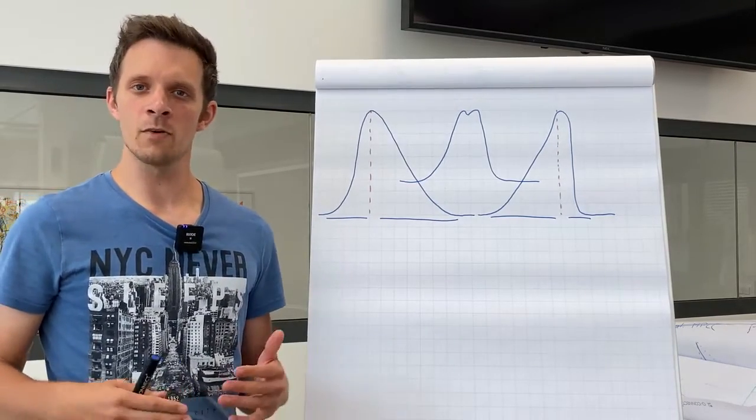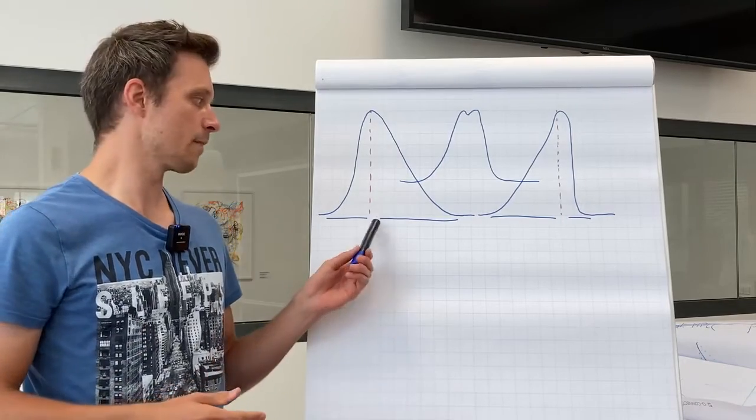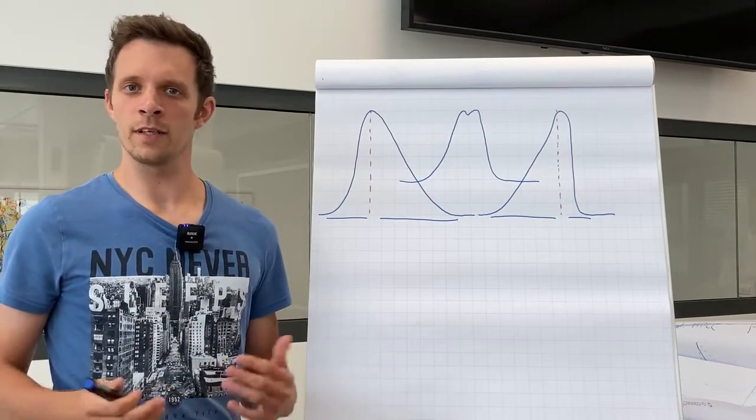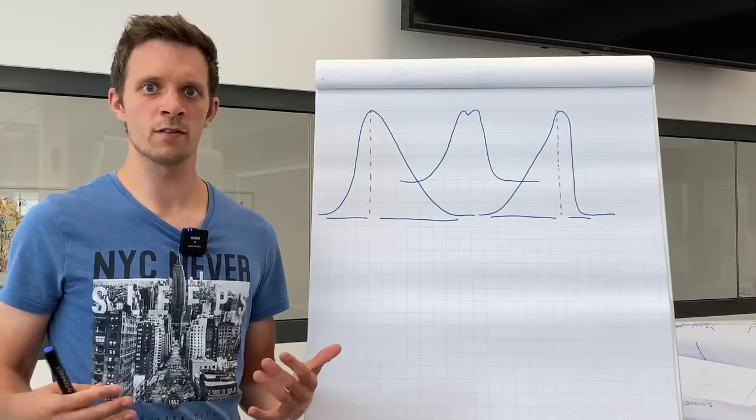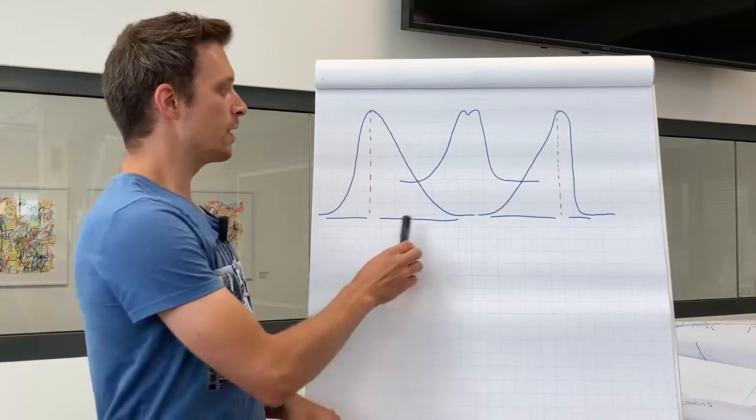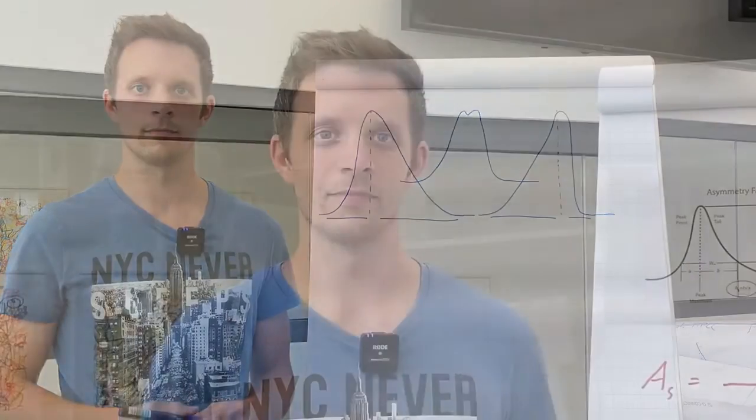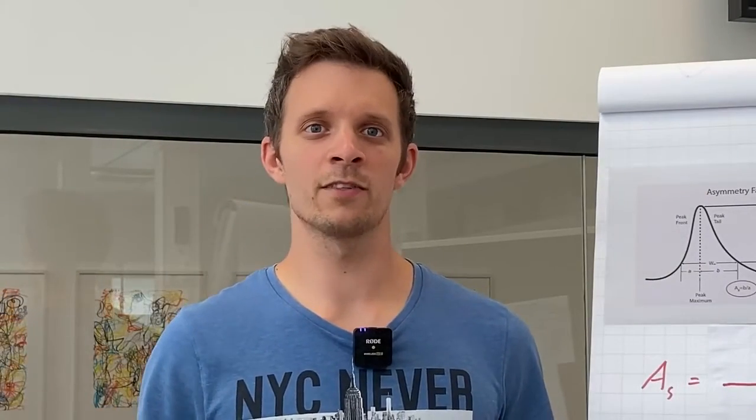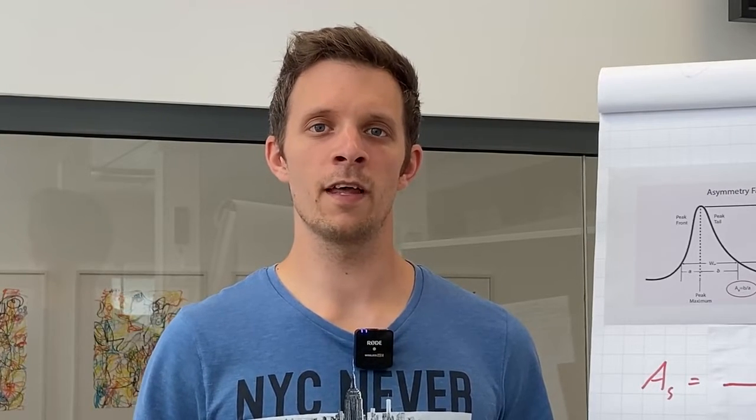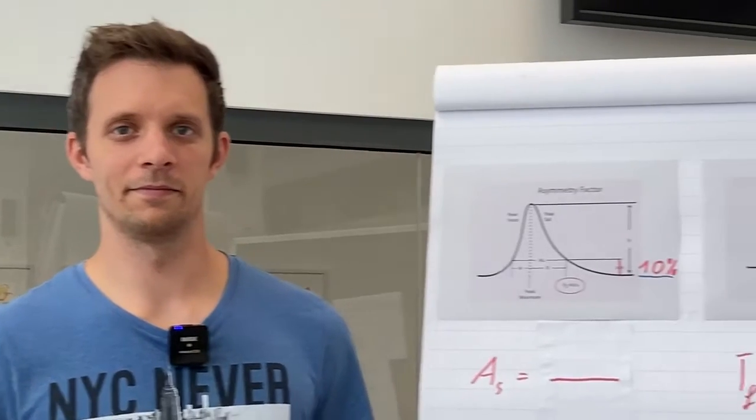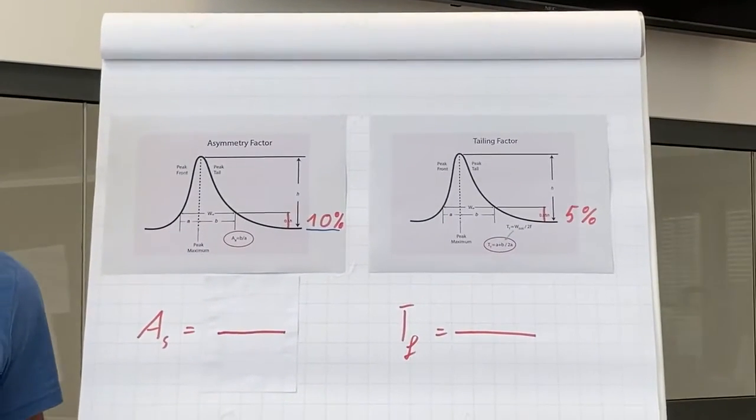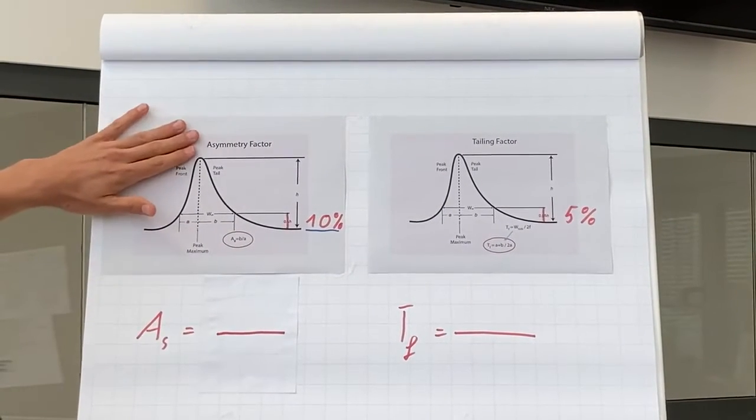But we can also calculate our peak shapes. This is important, for example, if you want to quantify your sample. Bad peak shapes can lead to incorrect results. There are two ways to calculate the peak shapes: the asymmetry factor and the tailing factor.